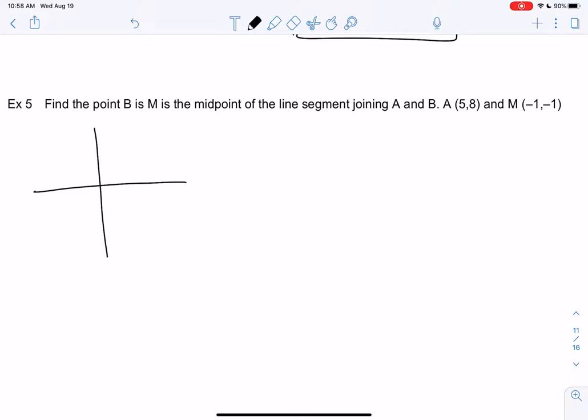It looks like we know A is (5, 8). So I'm just going to squeeze an A up here. It's (5, 8). And we know the midpoint is (-1, -1). So that's halfway, and I know that means B must be down here somewhere.